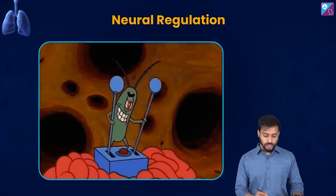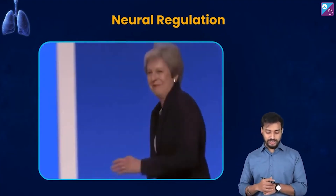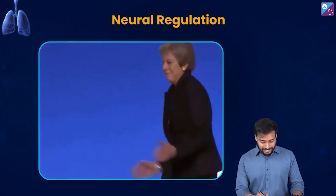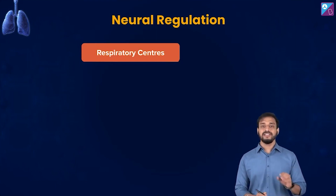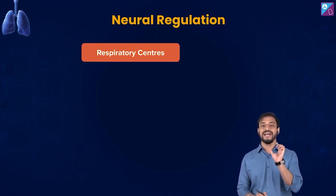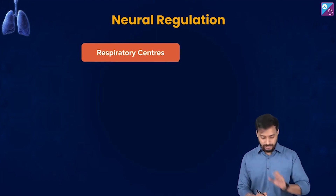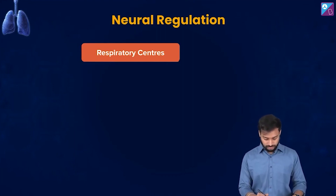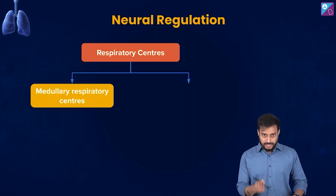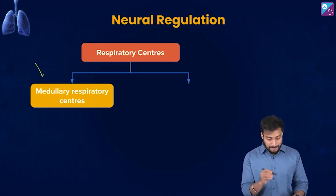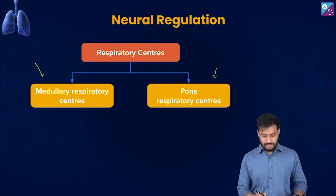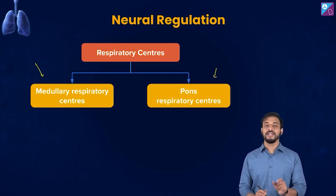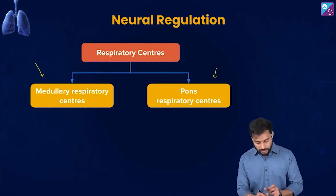Let's talk about the neural regulation — how is this regulated? There are some centers called the respiratory center. These control centers are generally comprised of the medullary respiratory center and the pons respiratory center.